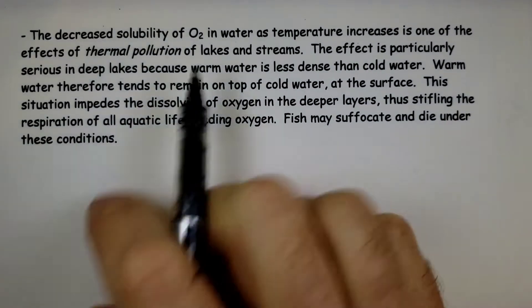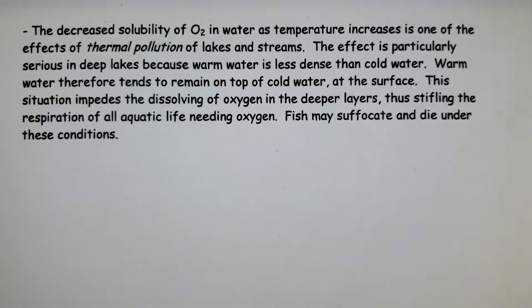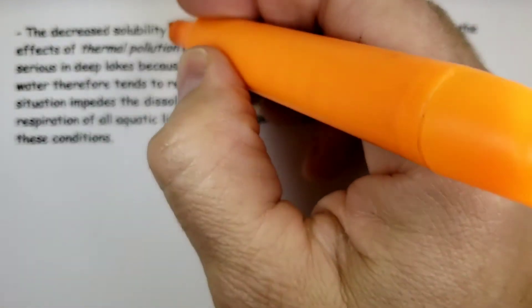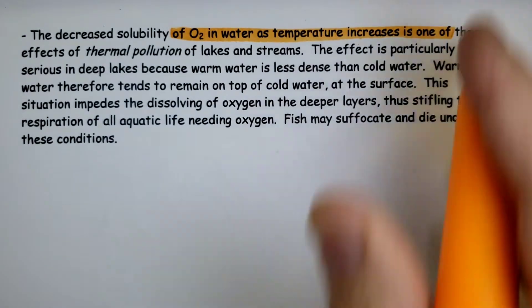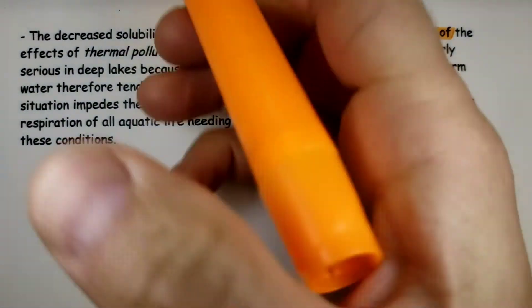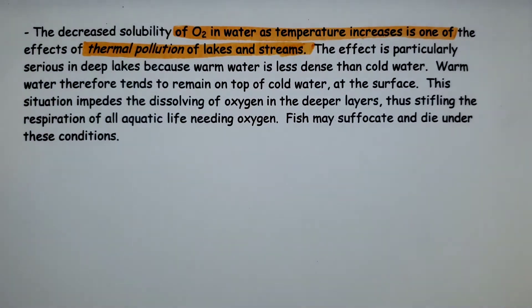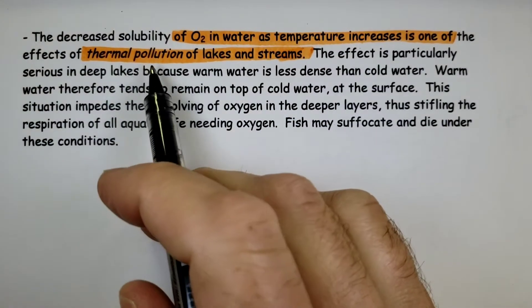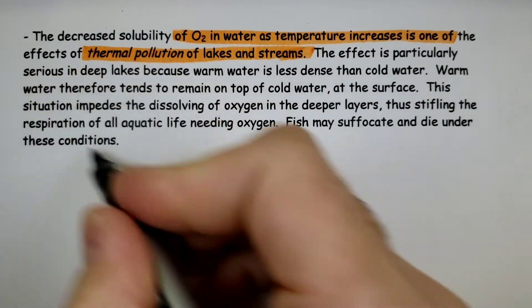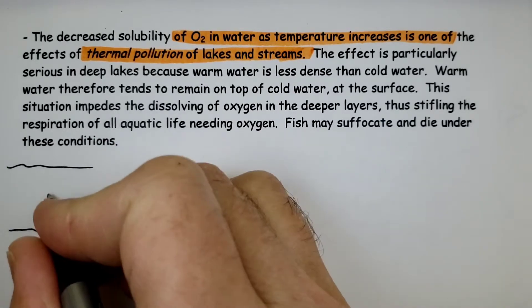So the decreased solubility of oxygen in water as temperature increases is one of the effects of what is referred to as thermal pollution. Often pollution, we think of dumping garbage into lakes, but there's another form of pollution called thermal pollution in which we heat up the temperature of the water so that less gases can be dissolved.